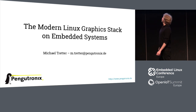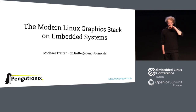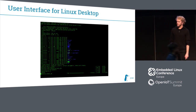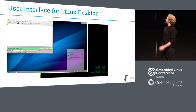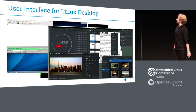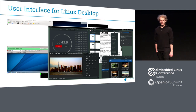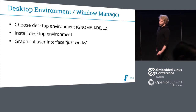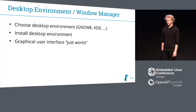I will be talking today about the modern Linux Graphics Stack on embedded systems. We will first have a look at a typical modern Linux user interface. Modern interfaces look like KDE, the Plasma Window Manager, or GNOME with all different kinds of applications. That's a typical desktop use case. On the desktop, you just choose some desktop environment like KDE or GNOME, install it, and your graphical user interface just works.